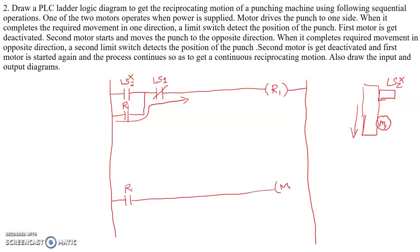From R1 we take another switch contact that is connected to the motor output M1. When the plunger reaches the downward position it triggers LS1. Since it is LS1, we need to switch off R1 and switch on R2, which will switch on motor M2. So the LS1 normally open contact closing switches on motor 2.